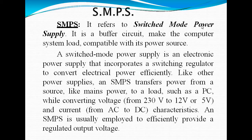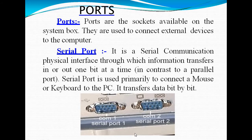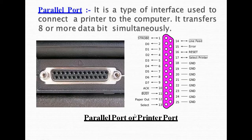Next is SMPS — Switch Mode Power Supply. It is basically a buffer circuit that makes the computer system load compatible with its power source. It is an electronic power supply that incorporates a switching regulator to convert electrical power efficiently — basically used to convert AC to DC. Ports are sockets available on the system box. Serial ports 1 and 2 are used for interface in which information is transferred one bit at a time.